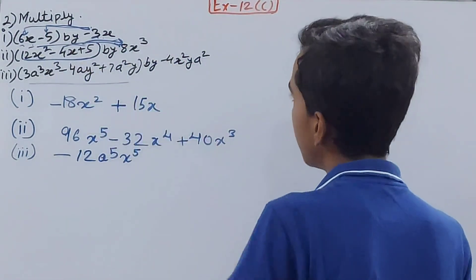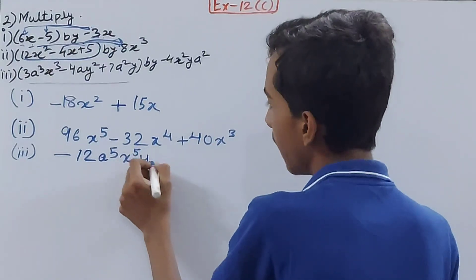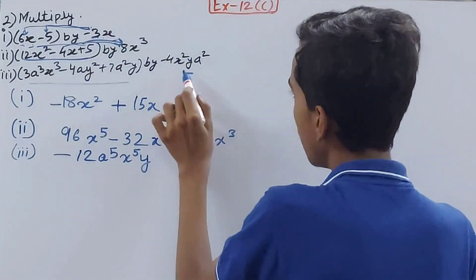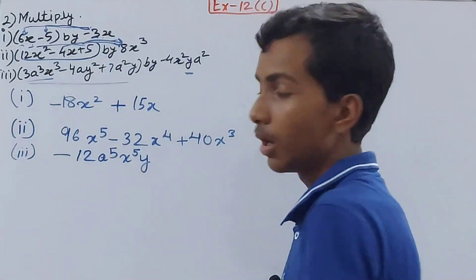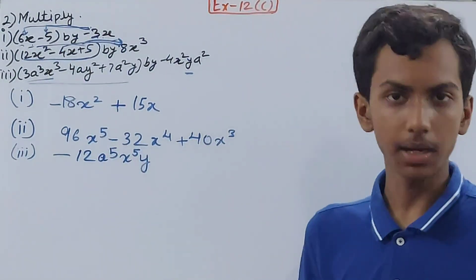You also have this y here, and in this term there is no y, so you cannot miss out on this y. When you're multiplying two terms, you're also multiplying y, and when there's no other variable with y in the other term, just write it down as it is.